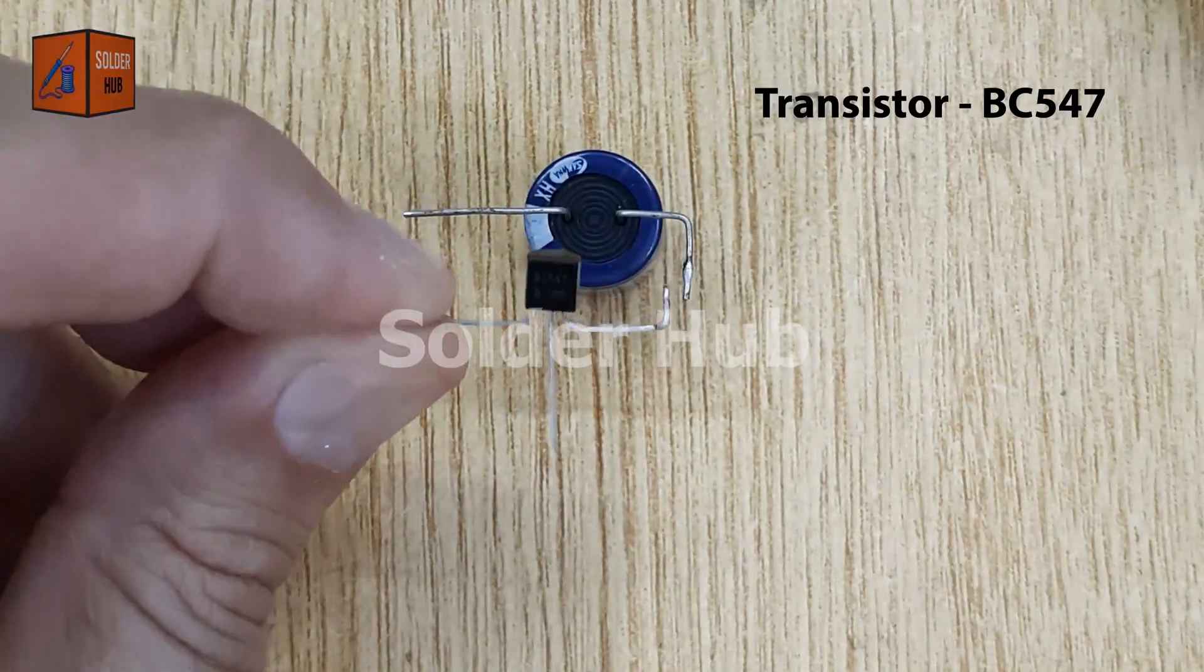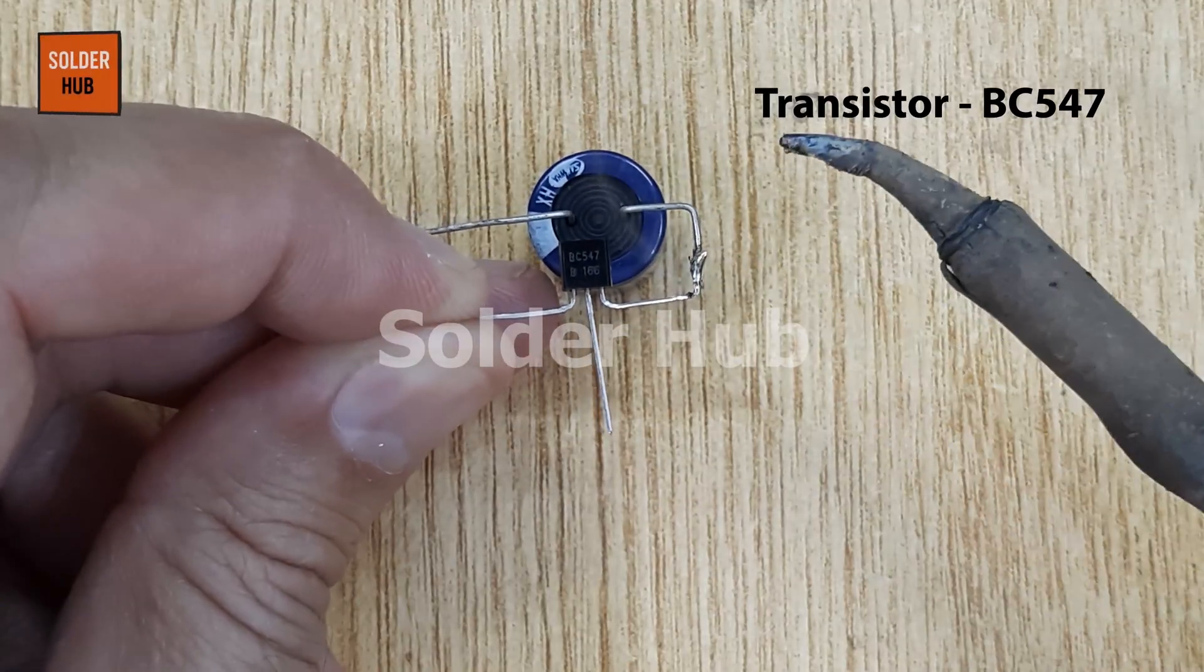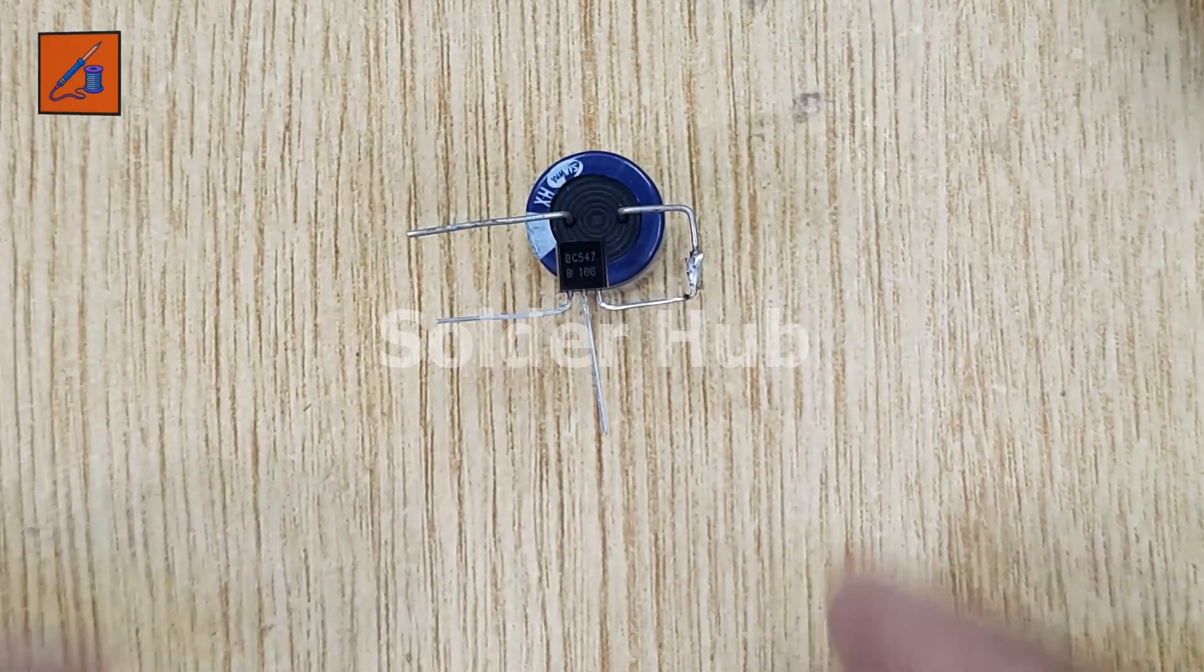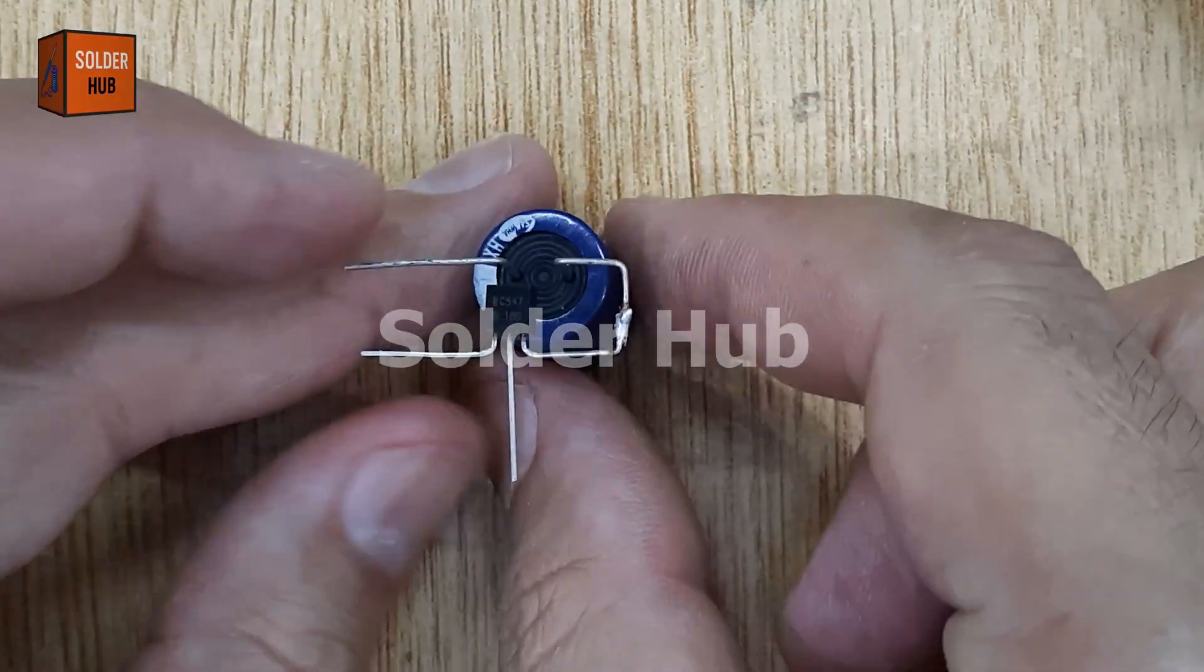Next, I take a BC547 NPN transistor, which will act as a switch in this circuit. I carefully solder the emitter pin of the transistor to the positive terminal of the capacitor, ensuring a secure electrical connection.